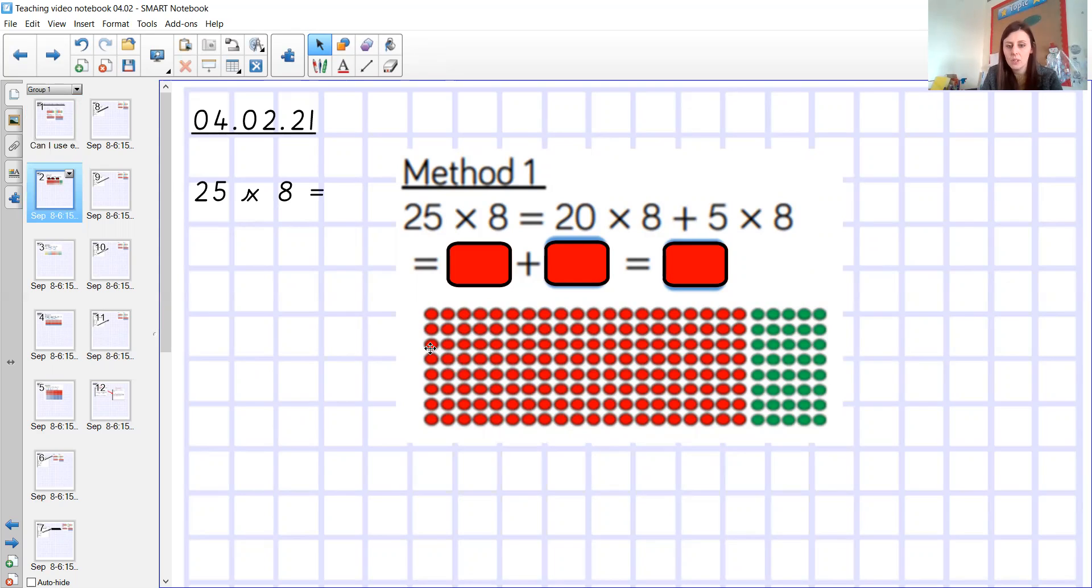However, we're going to have a look at it. So an array of 20 by 8, multiply that together, which gives you 160. The next thing you do then is to split it. So you've done the 20 part. Now do the 5 part by 8 also. So 5 times 8, nice and easy one, is 40, which added together gives you 200.